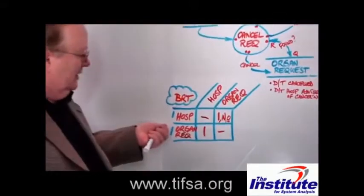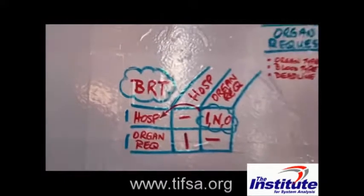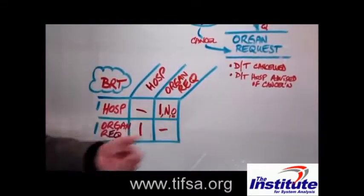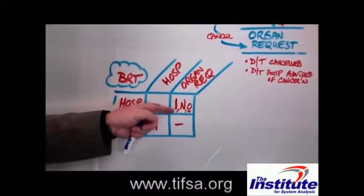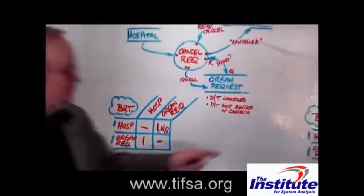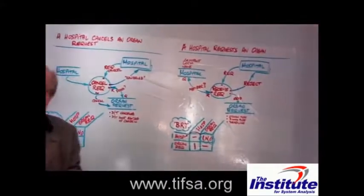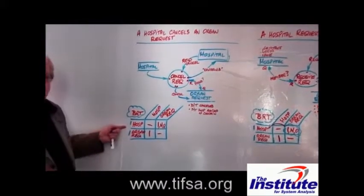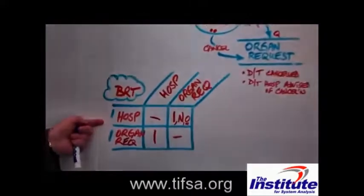Different context from the first diagram, therefore different rules. It's the same table structure — same ones, Ns, and zeros as shorthand — but when we write the rule, we use a different verb to signify the different context. Very straightforward once you get used to it. Thank you.